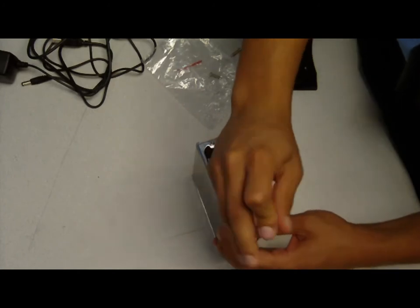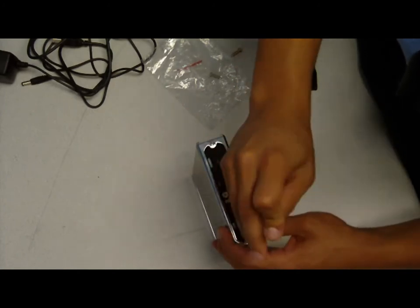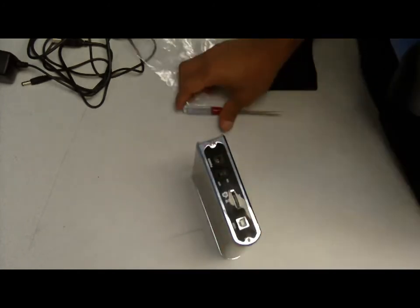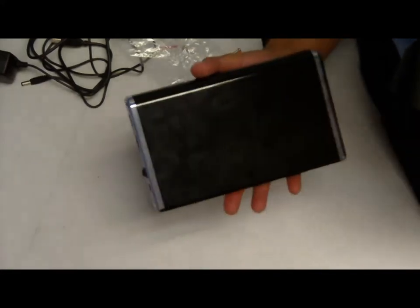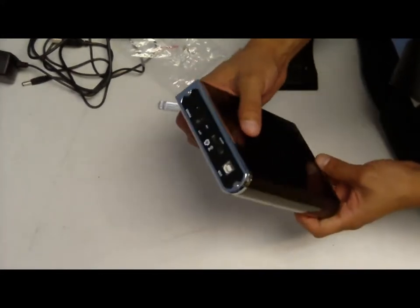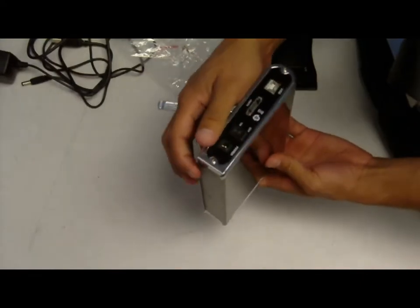There you go, this is the last screw. This is to keep the enclosure closed. And there you go, I successfully got your 3.5 inch SATA drive inside the enclosure.